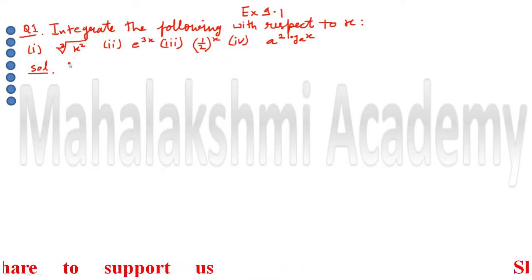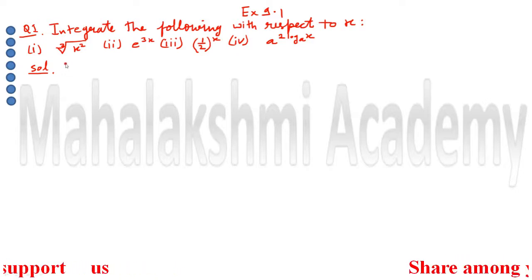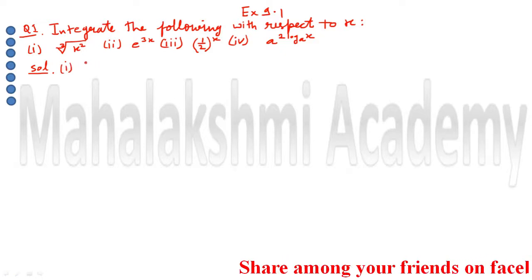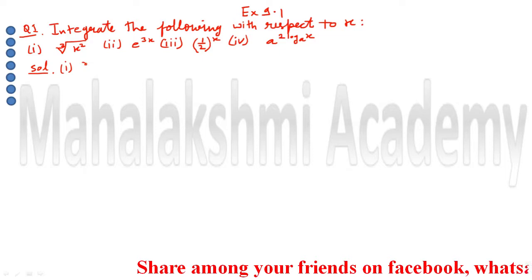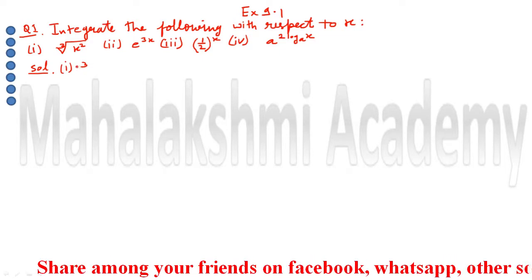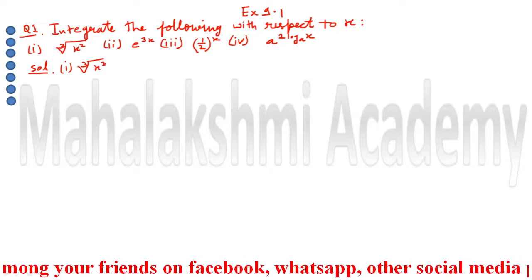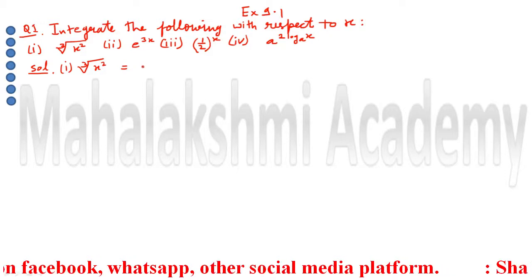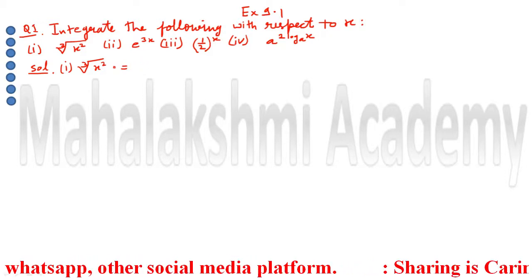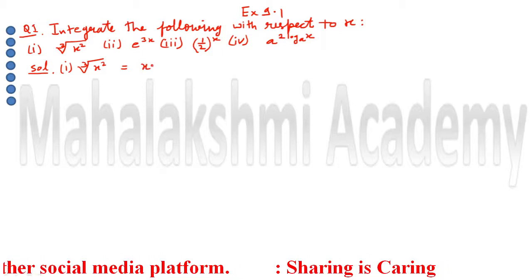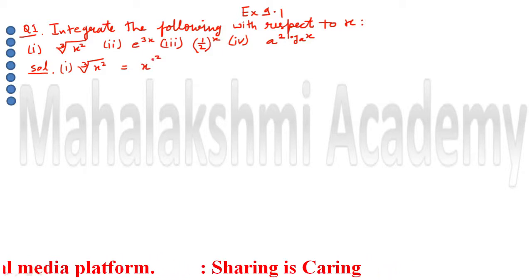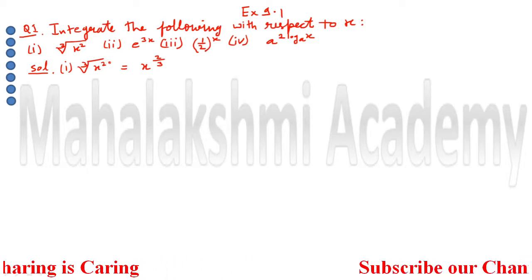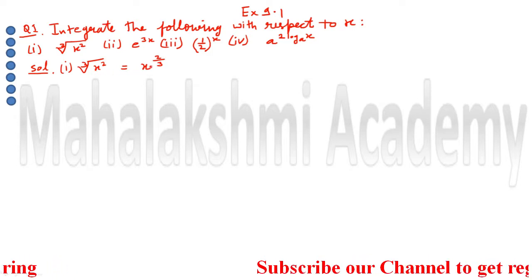The first part is to integrate the cube root of x squared. We can write the cube root of x squared in power notation as x to the power 2 by 3, because the cube root is 1 upon 3, so 2 multiplied by 1 upon 3 gives 2 upon 3.